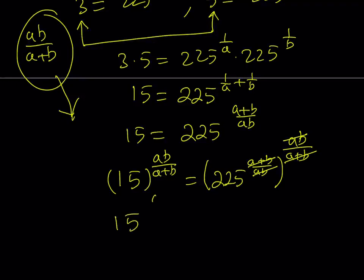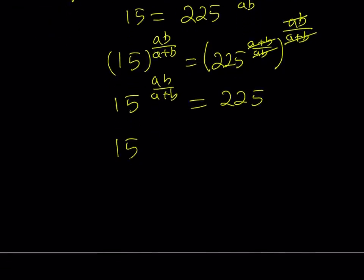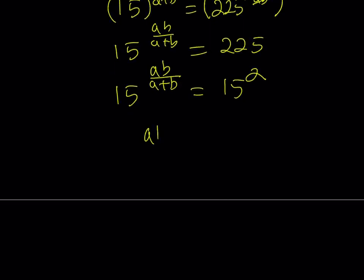So, this tells us that 15 to the power ab over a plus b can be written as 225. And 225 happens to be 15 squared. So, from here, since the bases are equal, the exponents are also equal. We can safely say that ab over a plus b is equal to 2, as we found with the first method before.